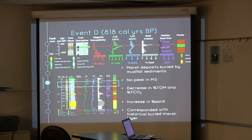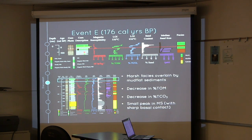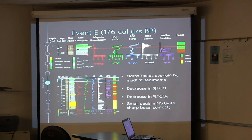Event D occurred at 818 Cal years BP. We see marsh deposits buried by mudflat sediments. There is no peak in magnetic susceptibility; however, there is a decrease in both percent total organic matter and percent carbonate, and a spike in percent sand. This event corresponds with one of the historically buried marsh layers. Event E, our last event, is at 176 Cal years BP, characterized by a marsh facies overlain by mudflat sediments. We see a decrease in percent TOM, a decrease in percent TCO3, and a small peak in magnetic susceptibility with a sharp basal contact.